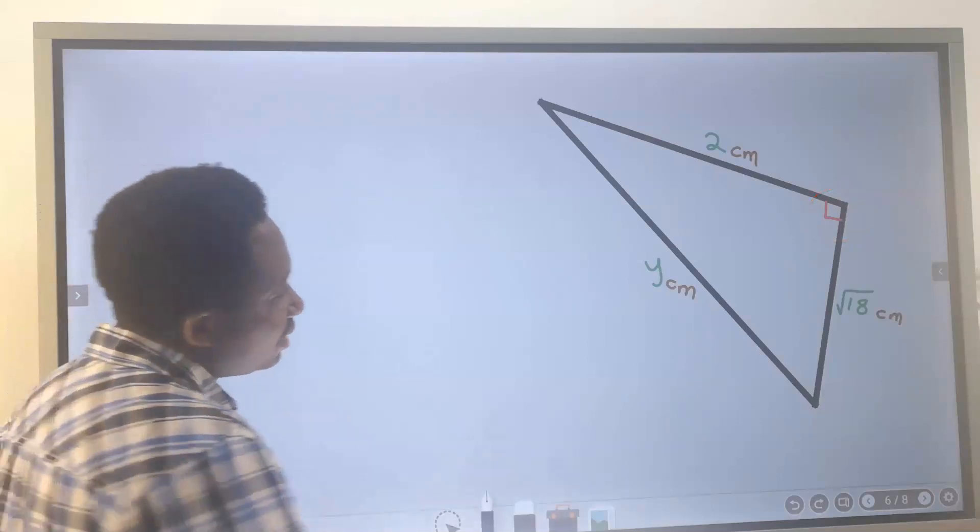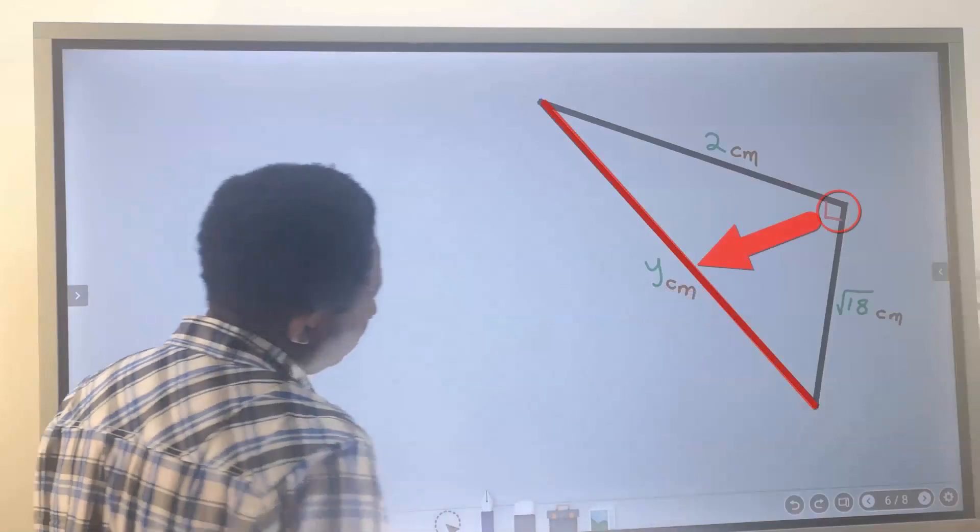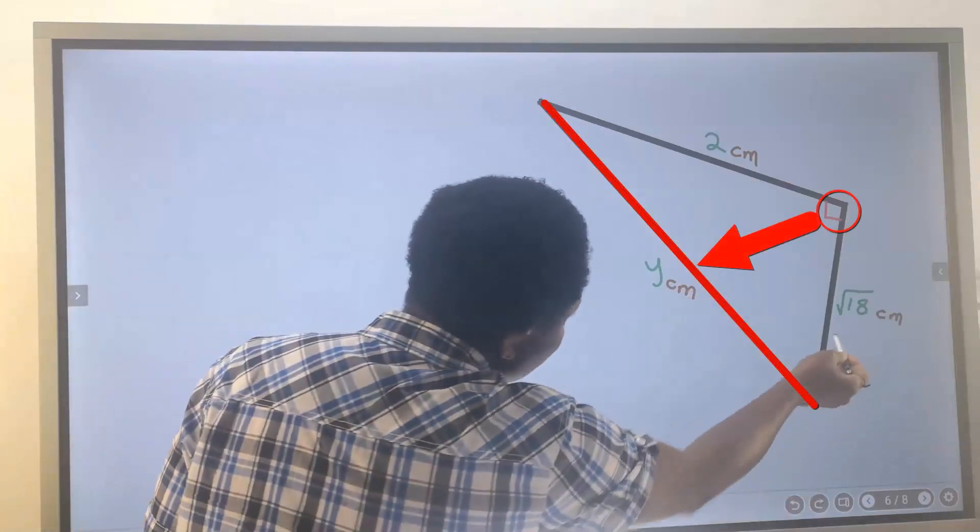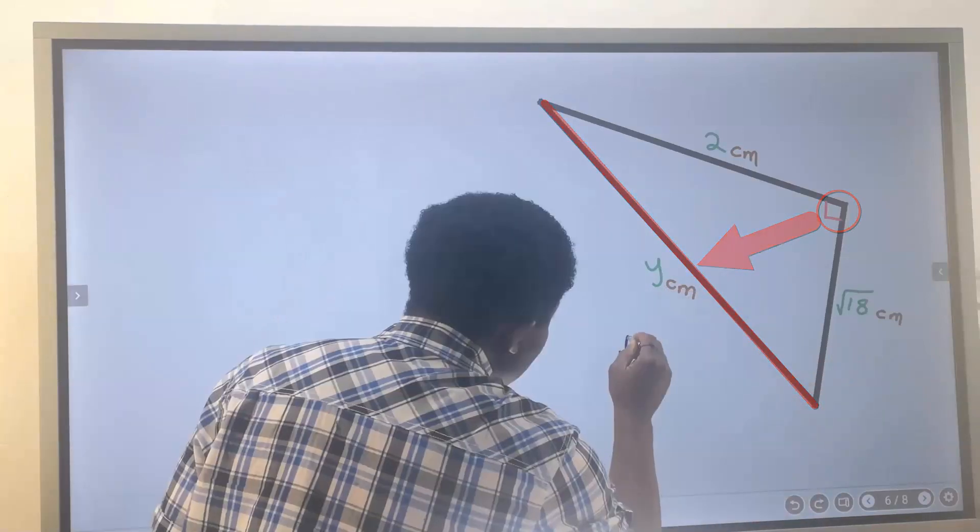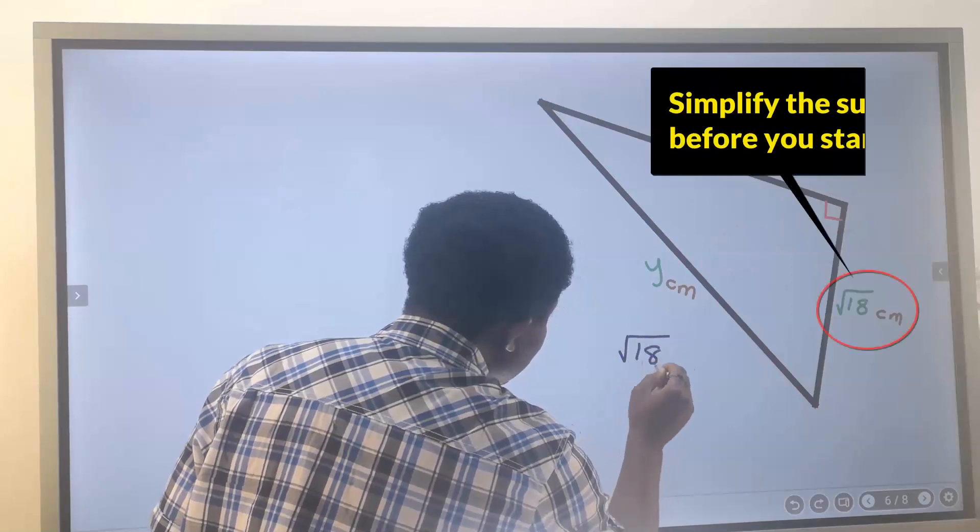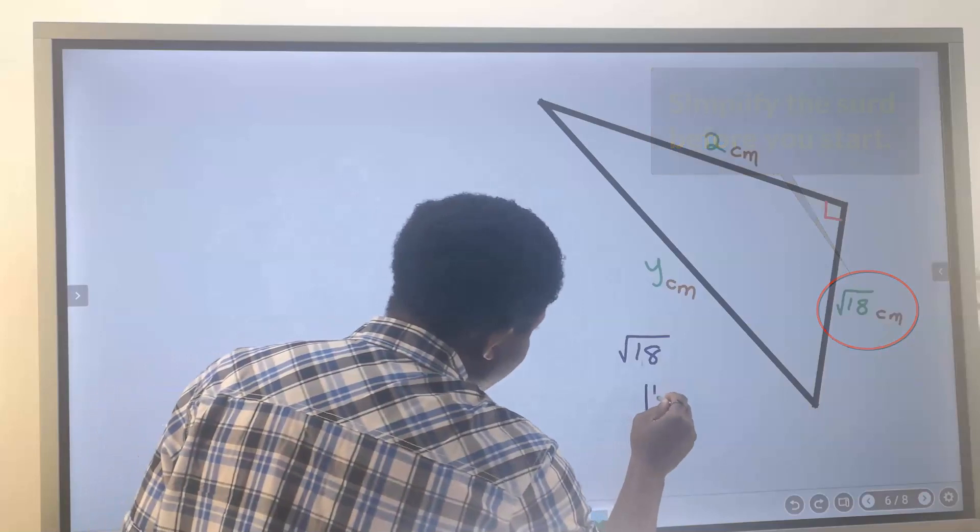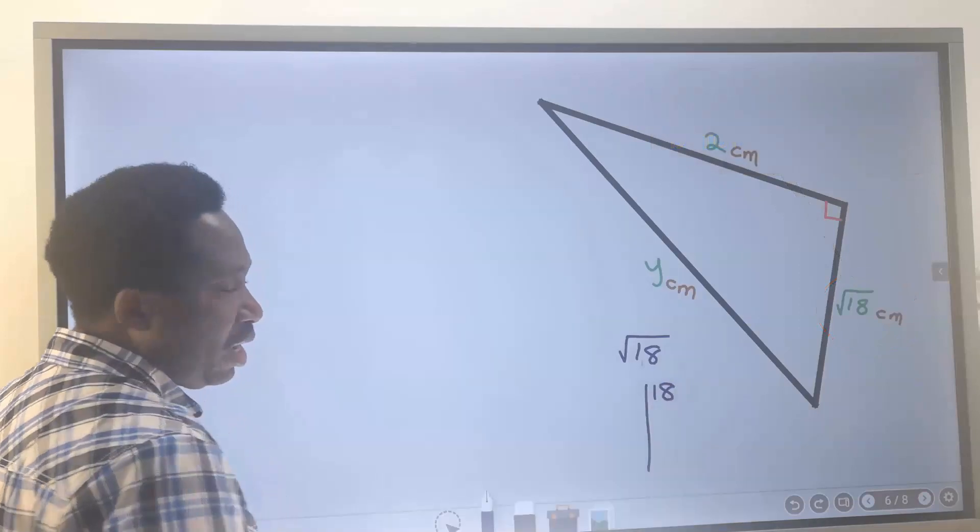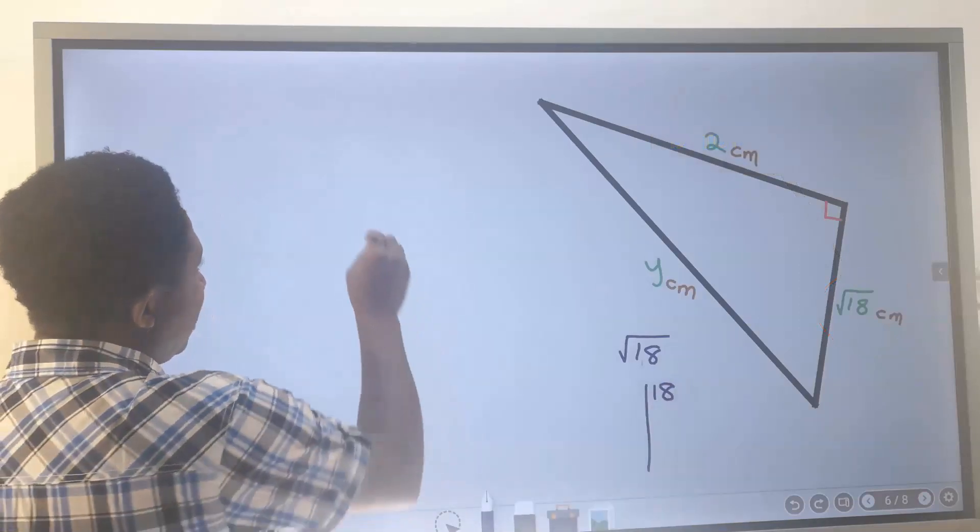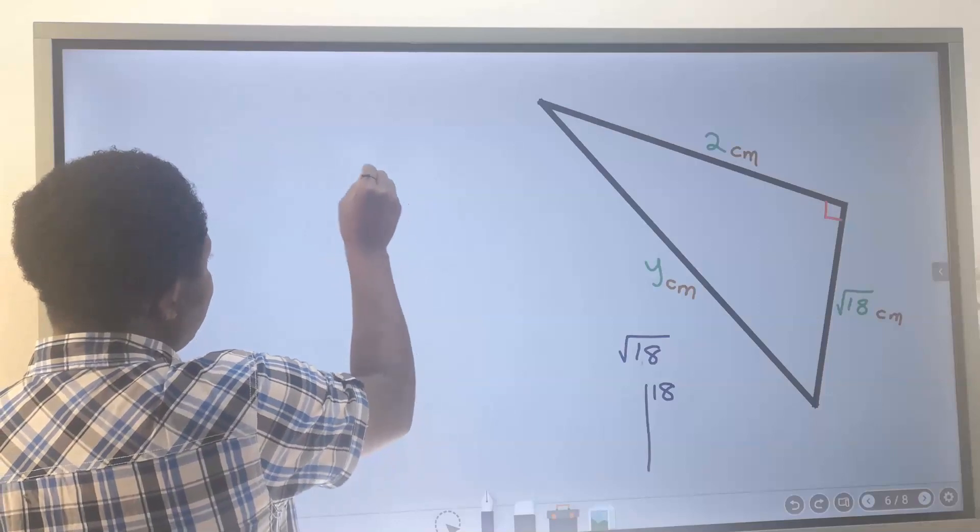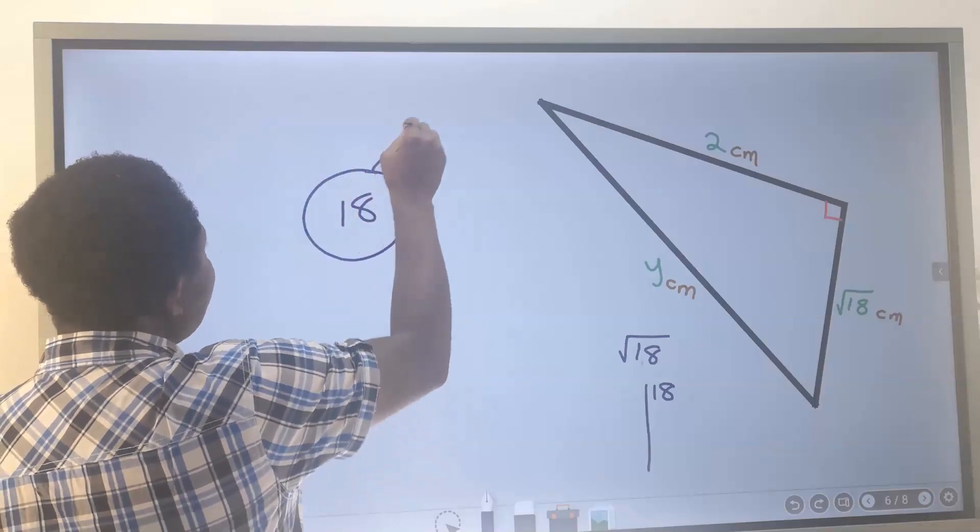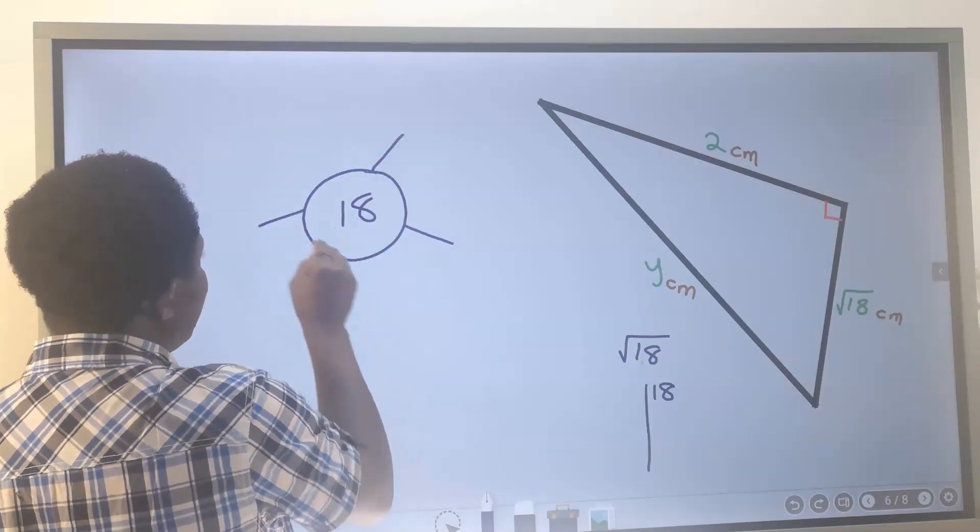The longer side is y. For the square root of 18, we draw a line and write 18. Another way I can say this is, what are all the factors of 18?